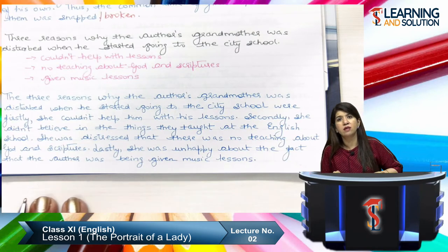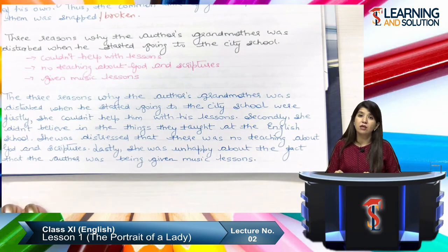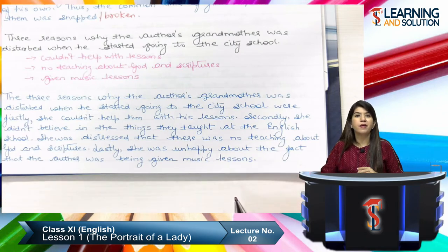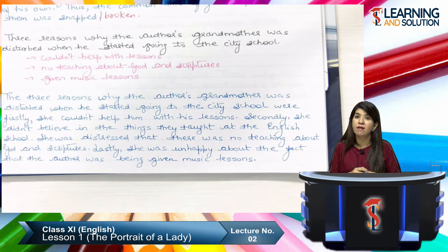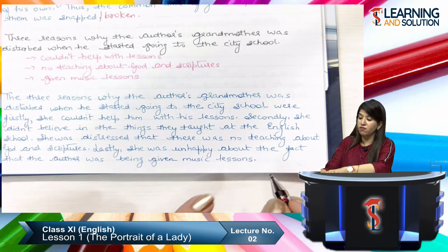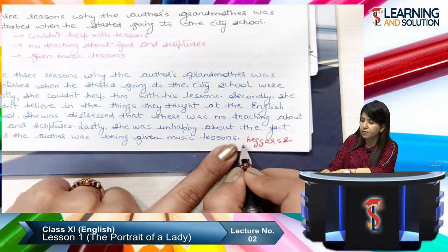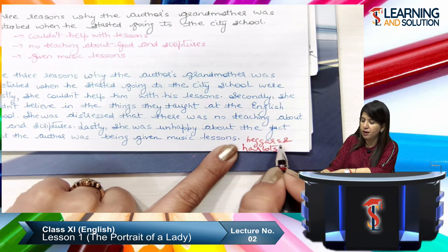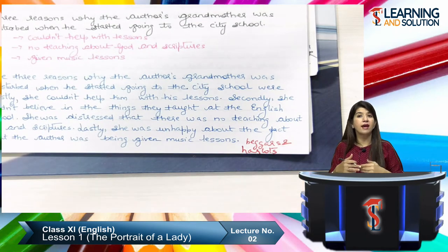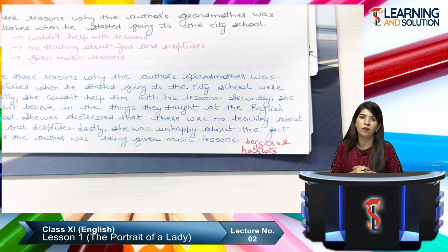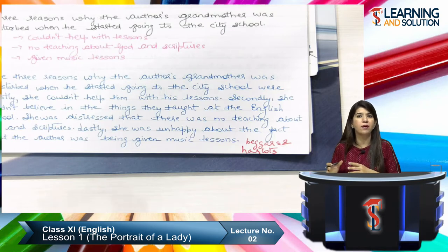If the question carries six marks, you can add why she was upset about the music lessons — because she felt that music is meant only for beggars and harlots, as mentioned in your book. That was her traditional thinking: that music was only for characterless women or prostitutes. So she objected to the author being given music lessons. You can expand this if a longer answer is needed.